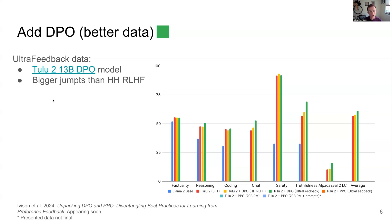It's still the best dataset for fine-tuning models almost a year after Zephyr and these Tulu models, which is really shocking. We need to have more preference data. Ultrafeedback gains a lot over the Anthropic HH data, mostly in chat, Alpaca Eval, and truthfulness. It does perform better across a ton of different evaluations, and we haven't had people do the work on why Ultrafeedback is that much better. It's likely something with the generations of OpenAI outputs being close to what these evaluations test.